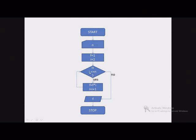Now i is equal to 3, so '3 less than or equal to n' will be tested. If it is true, control is transferred to the loop body and the process is repeated. This continues till the value of i is less than or equal to the given value of n. When this condition is false, we follow the false path — we display the value of f and then we stop.